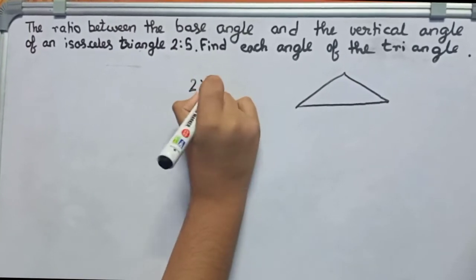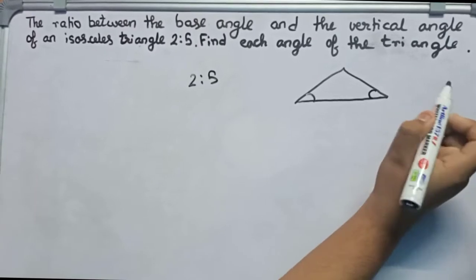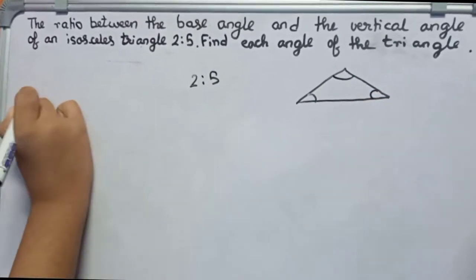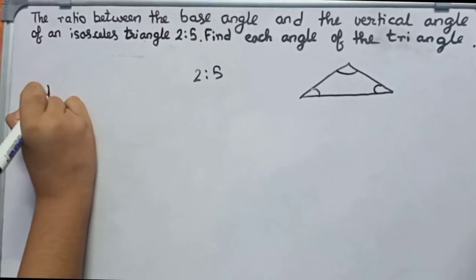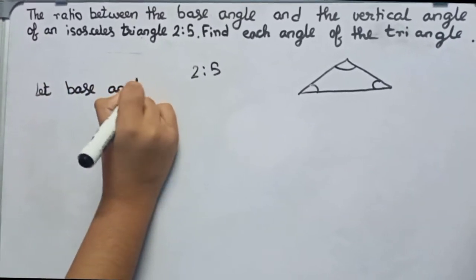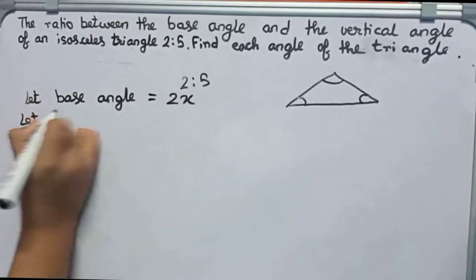is 2 is to 5. So there are two base angles - one base angle and another base angle - and this is the vertical angle. Now if we take, let base angle equals 2x and let the vertical angle equals 5x.